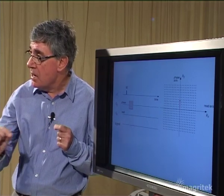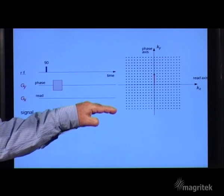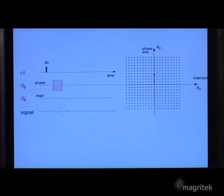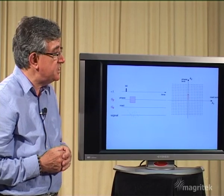So instead of being a single line of acquisition we're going to have multiple lines represented here by a matrix of points. And at each of these points we need to acquire the signal that will enable us to get a full two dimensional representation of the signal in the two dimensions of k-space.